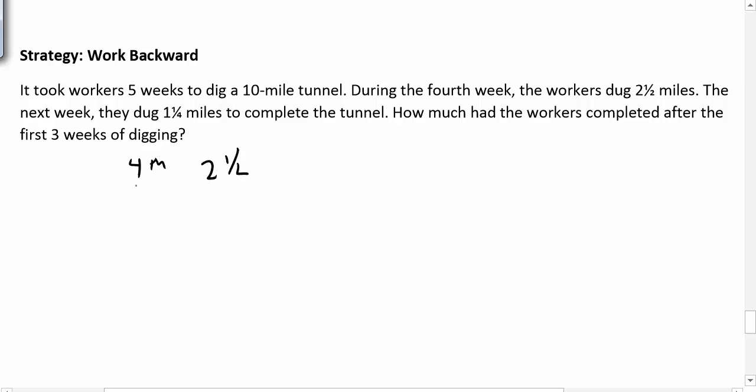And the following week, well, what's the following week, that's a W by the way, the following week is week five. And at week five, they dug one and a quarter mile. Well, can I figure out how much they dug the last two weeks? Sure. Two and a half plus one and a fourth. Okay, so let's add those together. So we need a common denominator. So two and two-fourths plus one and one-fourths is three and three-fourths.